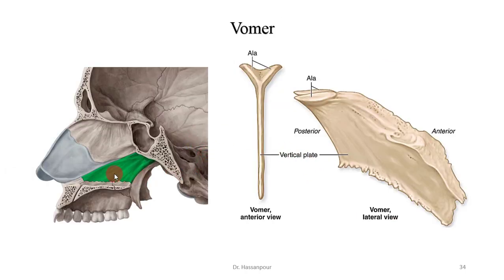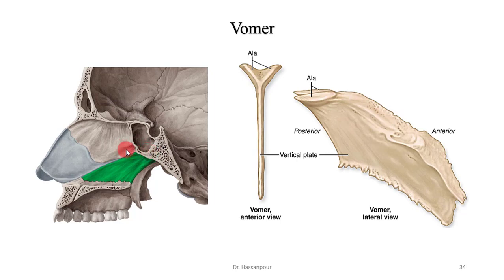In the nasal cavity, we also have the vomer bone. The vomer is a singular bone that runs vertically within the nasal cavity, separating the left and right sides. The vomer has a triangular shape and when viewed laterally resembles a farming plow. It articulates along its midline with both the maxillae and the palatine bones. Its curved thin horizontal projection, called the ala, meaning wing, articulates superiorly with the sphenoid bone. The vertical plate of the vomer articulates with the perpendicular plate of the ethmoid bone. Anteriorly, both the vomer and the perpendicular plate of the ethmoid bone form the bony nasal septum.